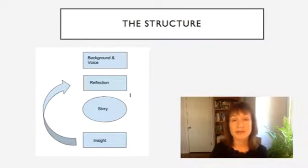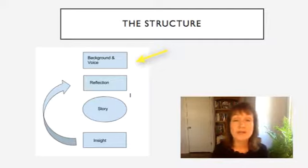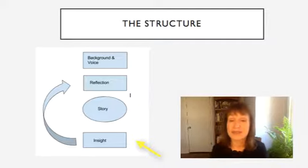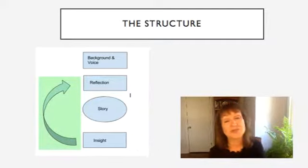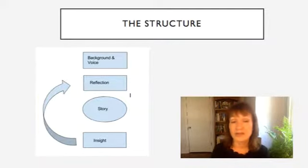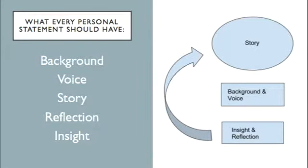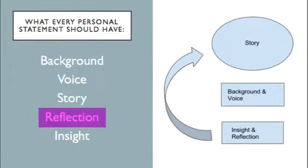Just to remind you, here are what some structures look like. For instance, this is a particular kind of essay beginning with background and voice, moving to reflection, then a powerful story, and ending with an insight that has a neat little reference back to the reflection. Your essay might look like this — or it might look different. You can see that another essay started right with the story, then gave some background and showed the voice of the writer, and ended with an insight and reflection. Every personal statement really should have these five elements: background, voice, story, reflection, and insight.